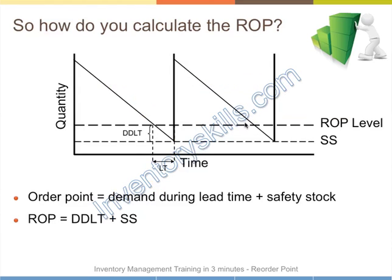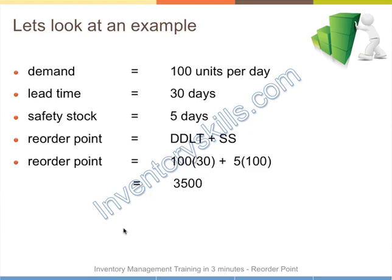How do you calculate it? The reorder point is simply the demand consumed during the lead time plus safety stock. Here's a quick example. Let's assume you're selling 100 units per day, your lead time is 30 days, and you've determined a safety stock of 5 days — though that could be 10 or 20, whatever you determine. The demand during the lead time is 100 units per day multiplied by 30 days, plus your safety stock of 5 days at 100 per day, which is 500. So the reorder point is set at 3,500.